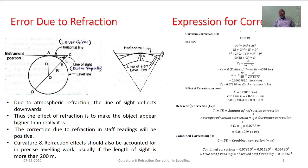Similarly, we can quantify the refraction correction. Based on studies, the refraction correction is assumed to be one-seventh of the curvature correction, so it comes to 0.0112D², and its value is positive. Most of the time we apply both corrections in a combined manner; summing them gives a combined correction of 0.0673D², and its net value is negative.